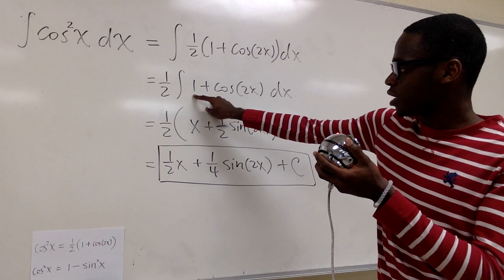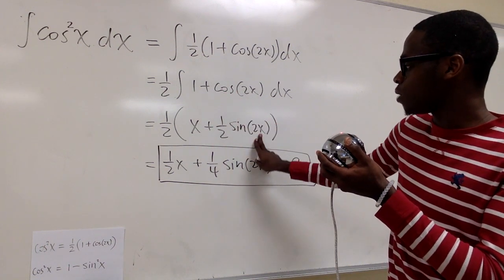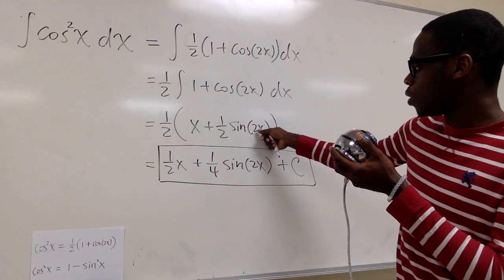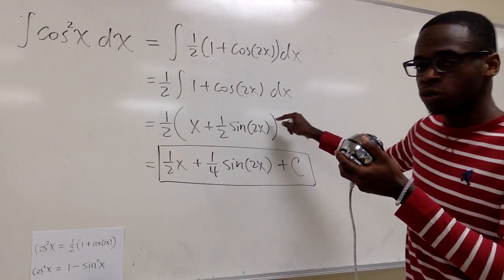The integral of 1 is x and the integral of cosine 2x is sine 2x, and remember how we used to do the derivative and the chain rule? We have to do the reverse chain rule, so instead of multiplying by 2 we multiply by 1 over 2.